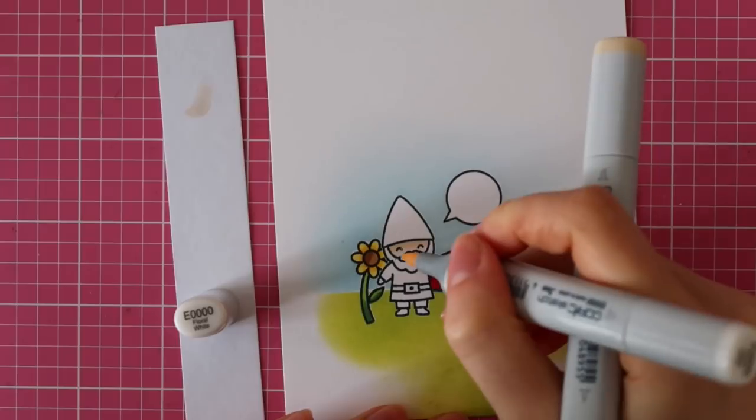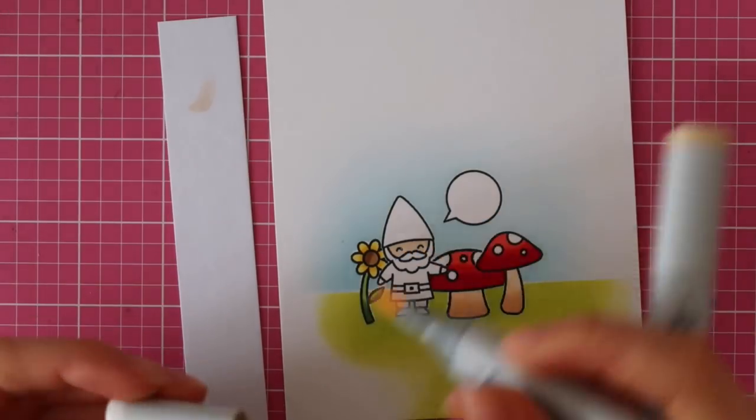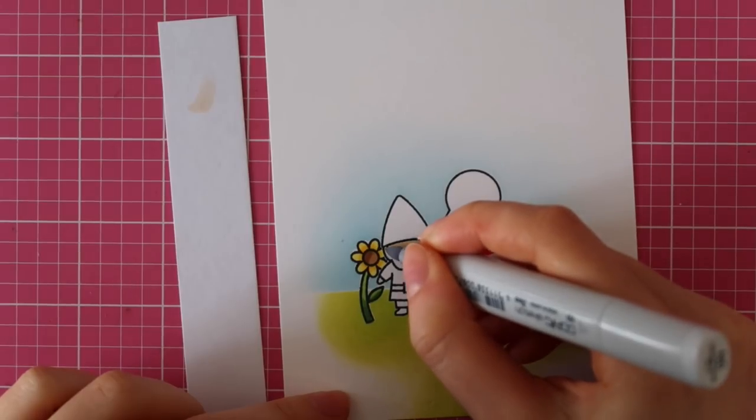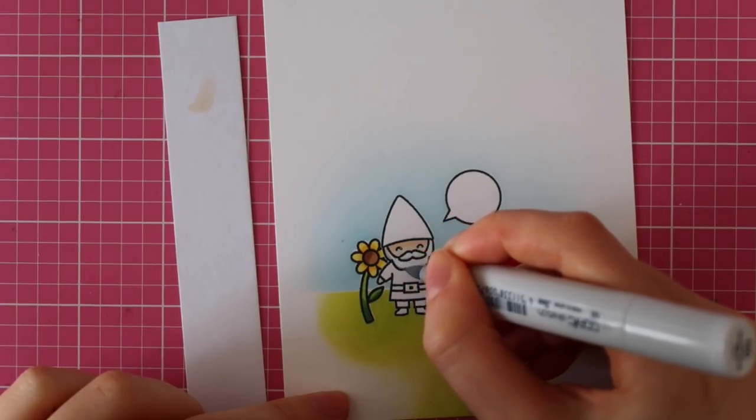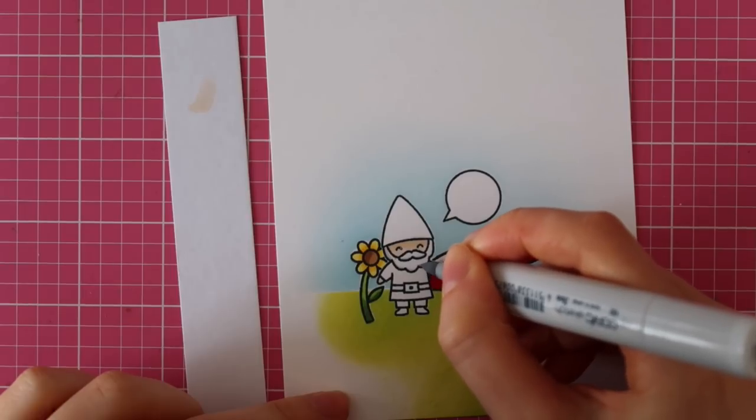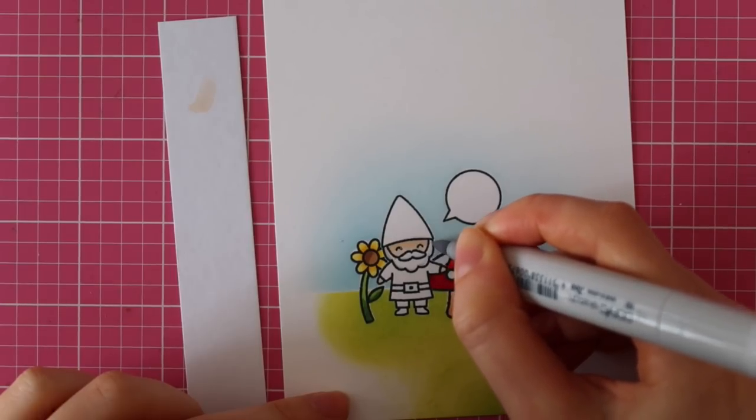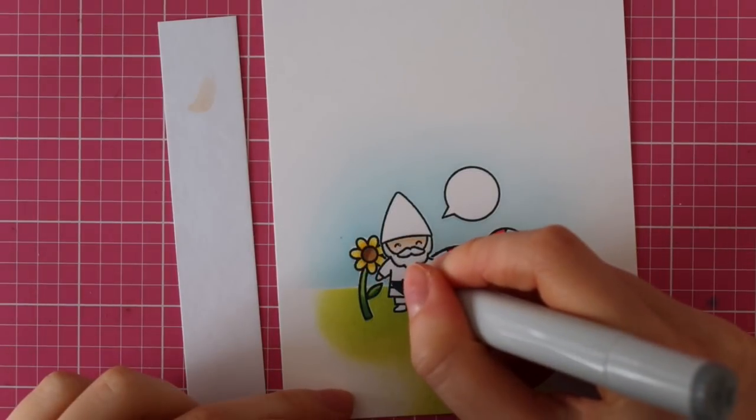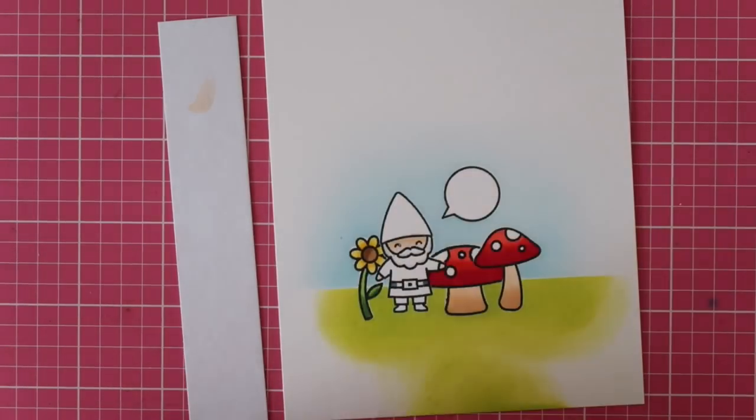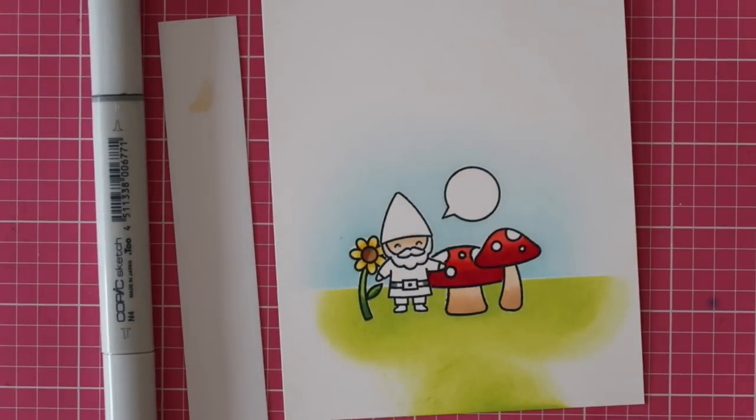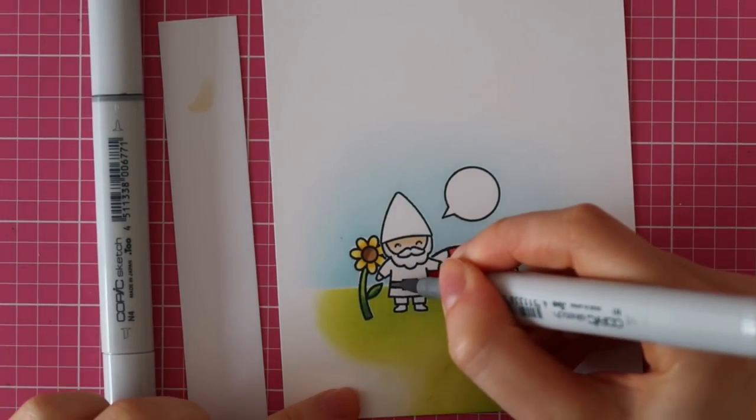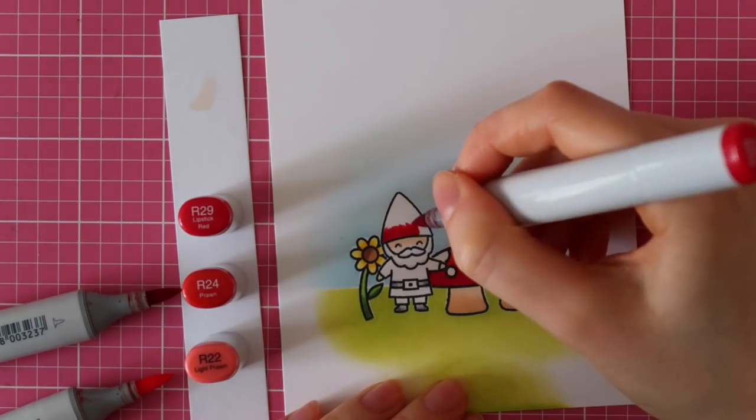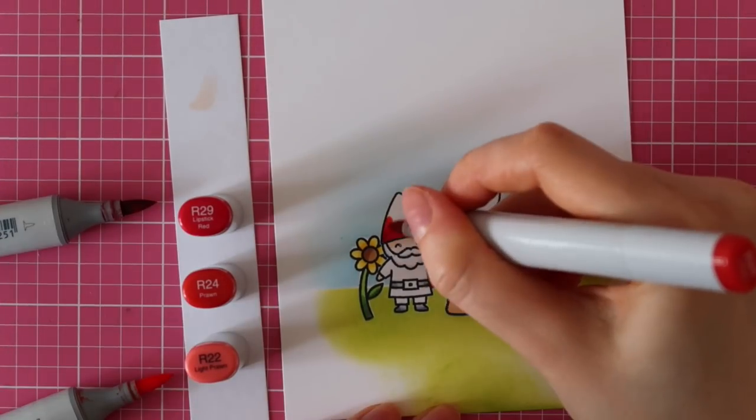For my gnome skin, I'm using E30 and E0000. As you can see, first I used E50, but that was too light, so I went in with the E30 marker. For his beard, I'm using the N0 marker along with the colorless blender to blend that out, just to create some really soft and subtle shading. For his belt and shoes, I used N4 along with the N1 marker.